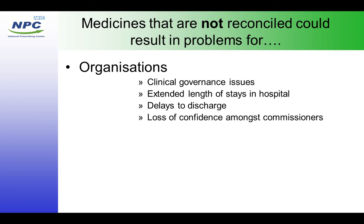If medicines are not reconciled appropriately, looking at the patient, it could result in an extended length of stay in hospital — normally measured in days or weeks. If we don't know what medicines a patient is on, we can't treat them as appropriately as we should, and we could give a drug that's contraindicated — especially in the case of drugs with long half-lives. For example, if a patient was on amiodarone but only stopped taking it a week ago, it will still have a clinical effect for at least two months. This can also result in delays to discharge from hospital and a loss of confidence amongst commissioners in the community.